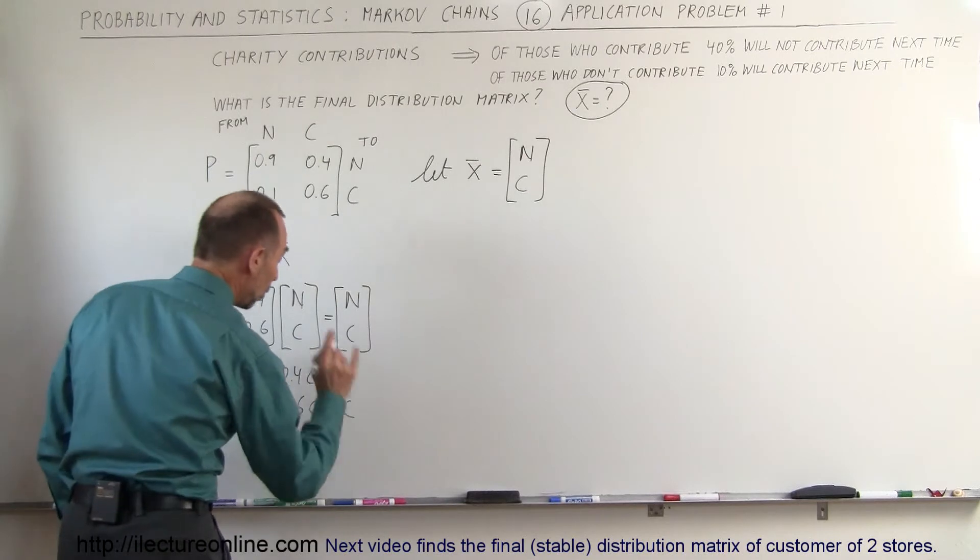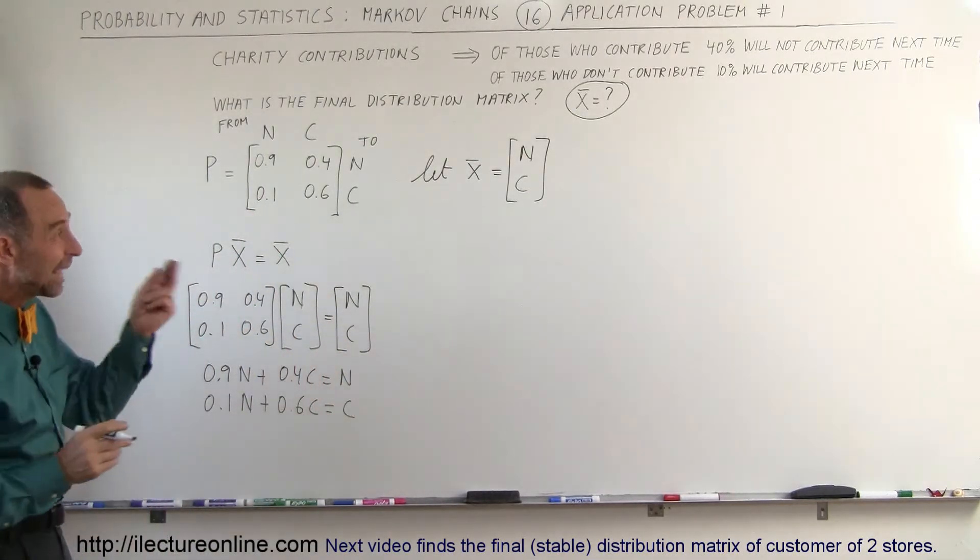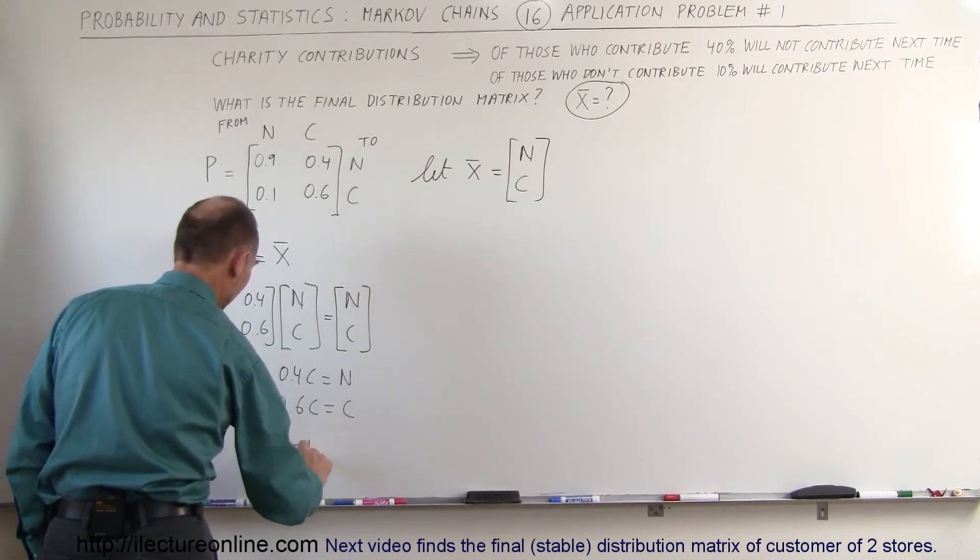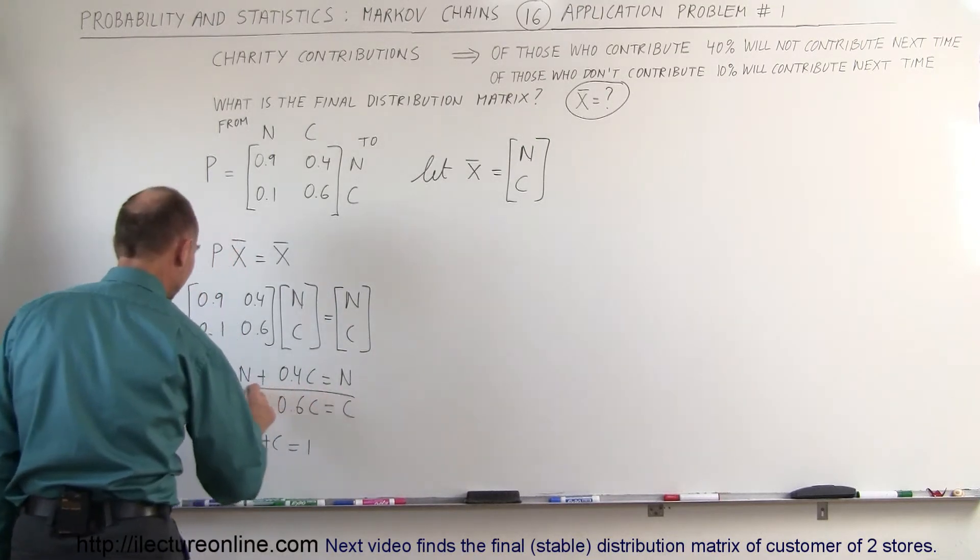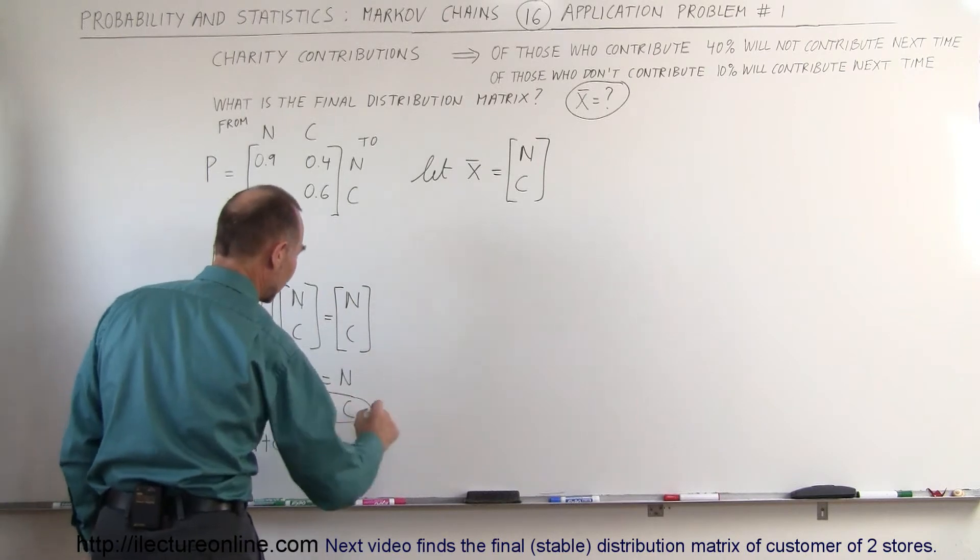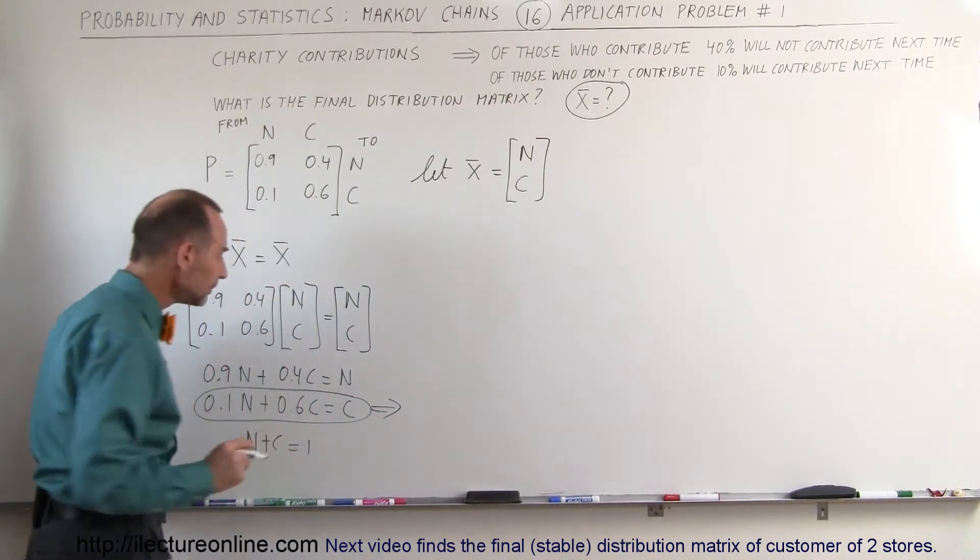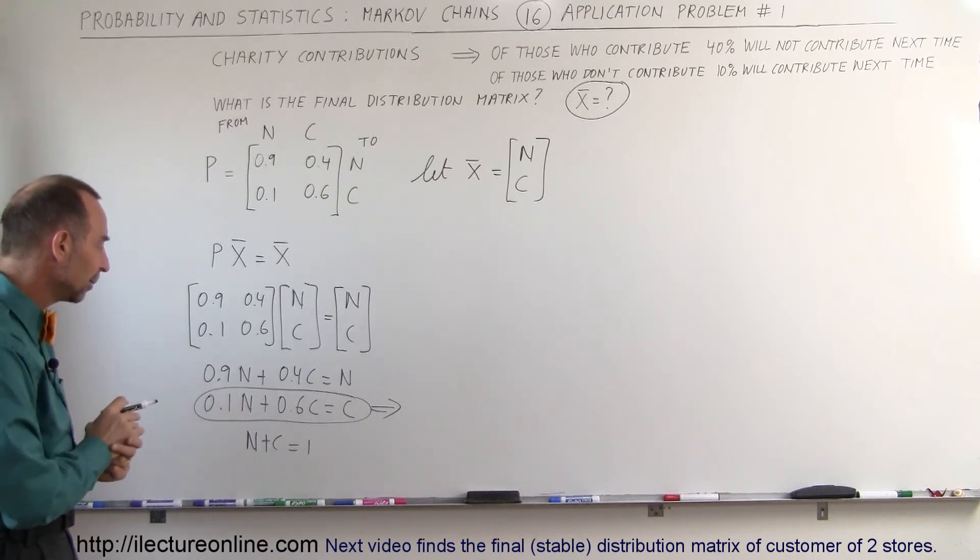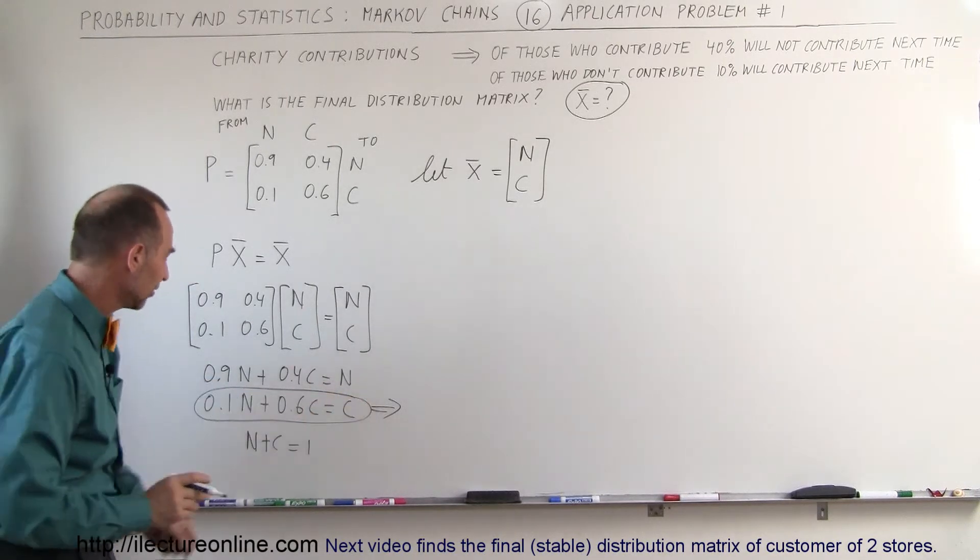I'm going to take, oh, and one more thing, of course, we know that N plus C have to add up to 1, so we can write that as well, N plus C have to equal 1. I'm going to take my second equation, because those have lower numbers in it, that's easy to work with, and we're going to solve for one of the variables in terms of the other variable. So we're going to move the 0.6C to the other side.